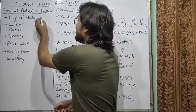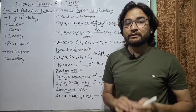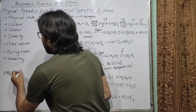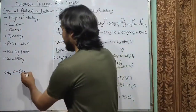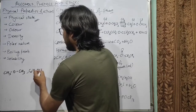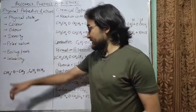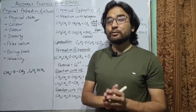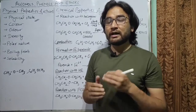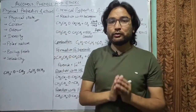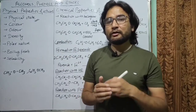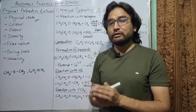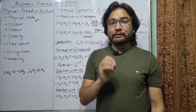The first thing is the physical state of ethers. The first compound, dimethyl ether (CH3OCH3), and one more compound, ethylmethyl ether (C2H5OCH3) — these first two compounds, dimethyl ether and ethylmethyl ether, are gases at room temperature while the higher ethers are liquids. This is because of the increase in molecular mass of the ethers, and because of this increase, the Van der Waals force of attraction also increases, causing them to become liquids.